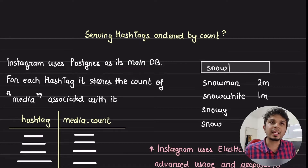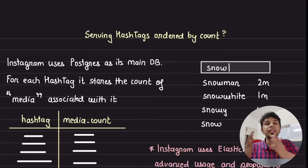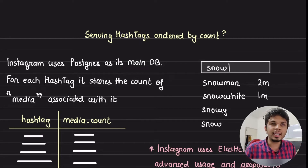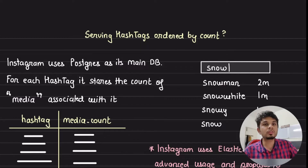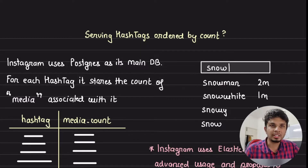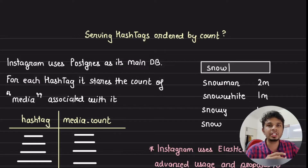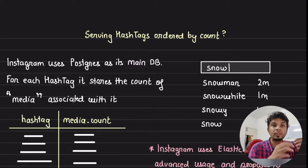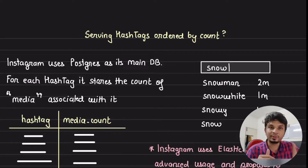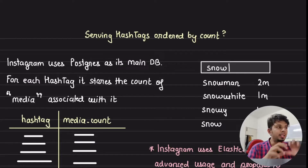Instagram has millions of hashtags and millions of people tag their photos every single day. To aid discovery, Instagram allows us to search for a hashtag. In this video, we will take a detailed look into how Instagram efficiently searches for hashtags and serves them ordered by count. We will also dive deep into a super interesting database optimization called partial indexes.